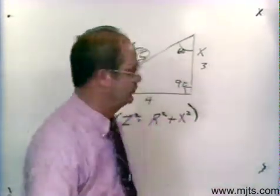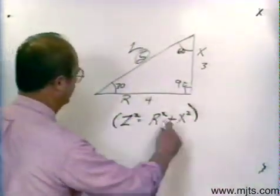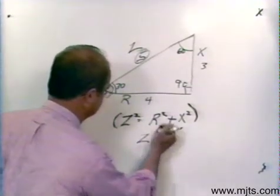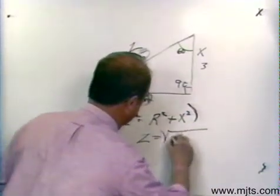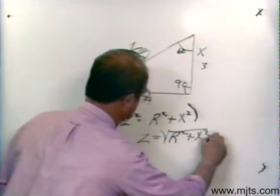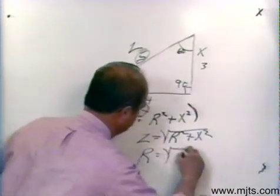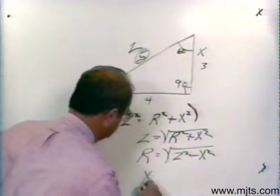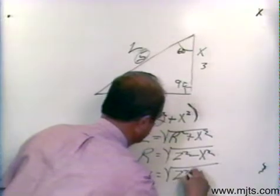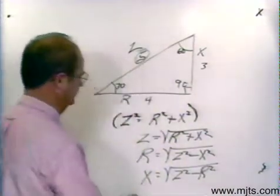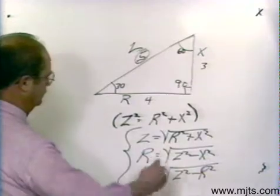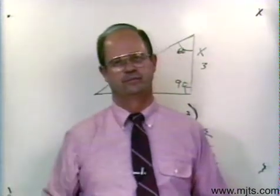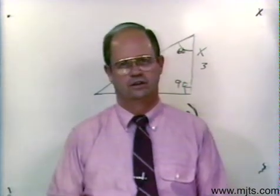Okay, now the three formulas that we've gained from this Pythagorean theorem is that Z is equal to the square root of R squared plus X squared. R is equal to the square root of Z squared minus X squared. Or X is equal to the square root of Z squared minus R squared. Those would be the three formulas that we will use as we go on in our program. Now let's go on in our program. See you soon.